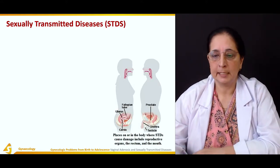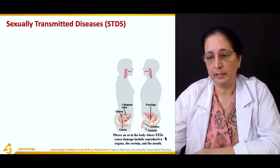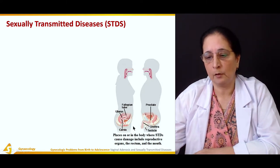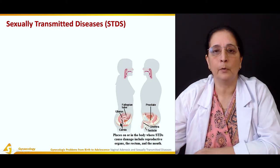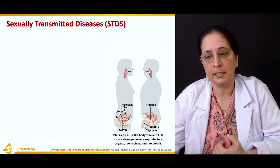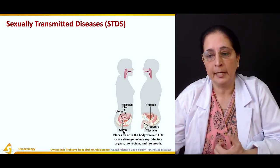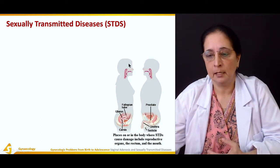Sexually transmitted diseases. These are some places on the body where STDs cause damage, including the reproductive organs, the rectum, and the mouth. In females, the mainly affected organs are the cervix, uterus, and fallopian tubes; in males, the urethra, testes, and prostate; and also the mouth.